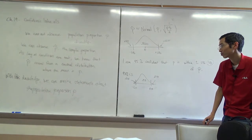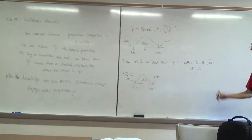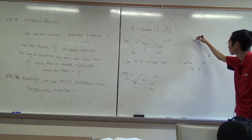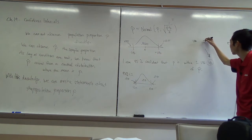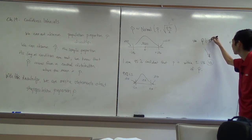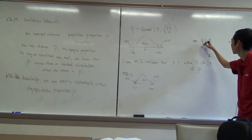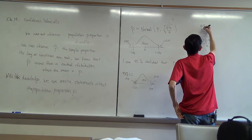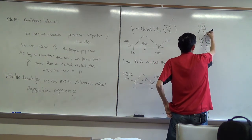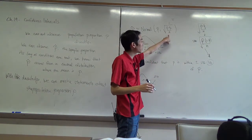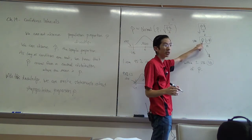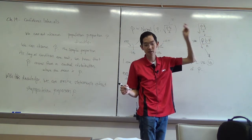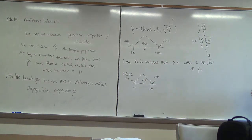So we just wing it and do our best guess. We're going to use p-hat instead of p for the standard deviation. We'll use the square root of p-hat times q-hat over n — where q-hat is 1 minus p-hat — and just plug that in. When we use the sample proportion p-hat rather than the actual value p, we call this the standard error.